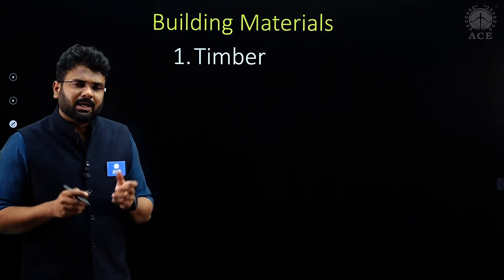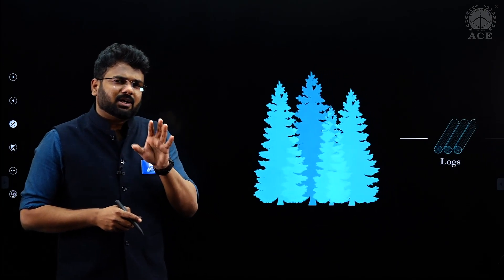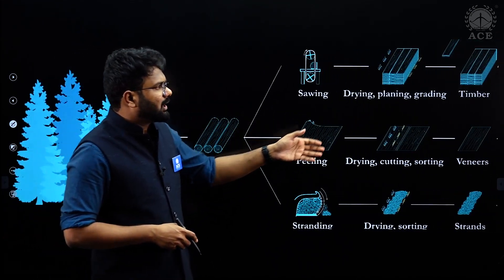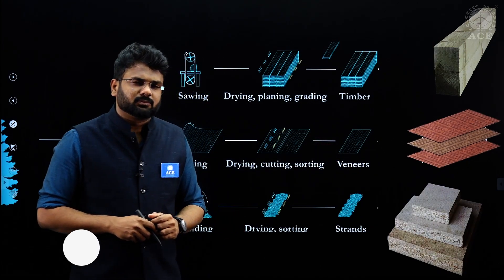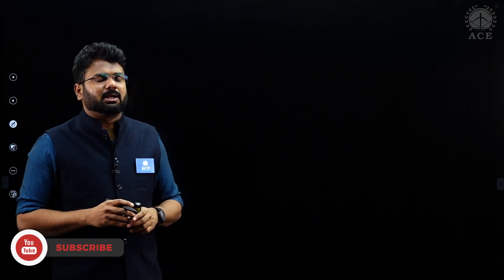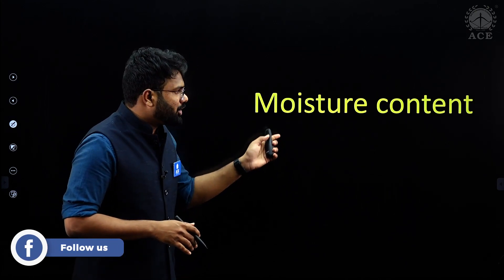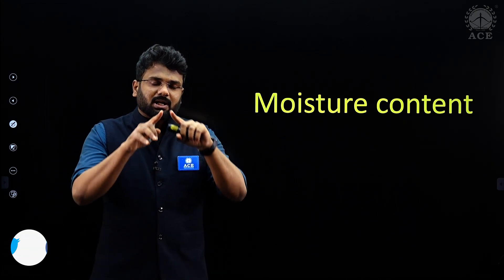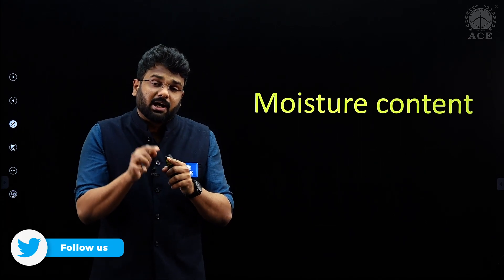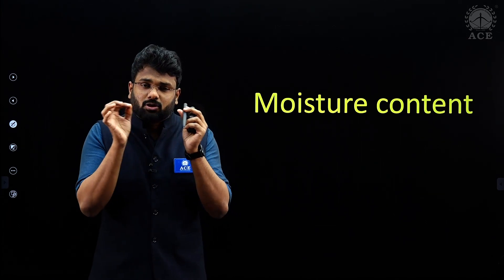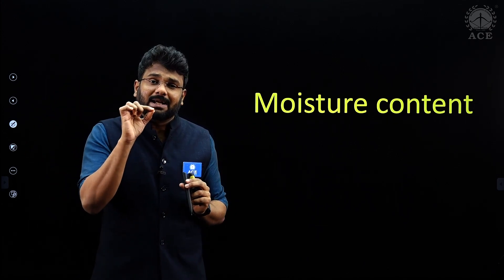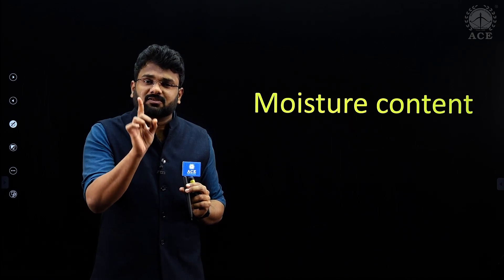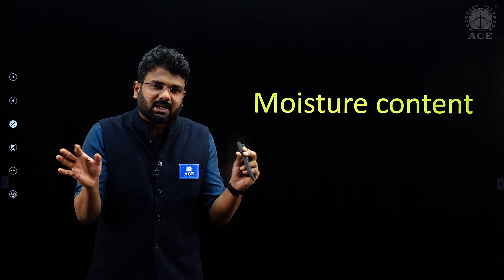First chapter is timber. Timber we will be getting from trees — we will cut them into logs, and after different processes we will be getting our timber sections: plywood, wood, and other industrial timber. One important parameter from your site point of view is the moisture content in your timber section. It should have the perfect moisture content.